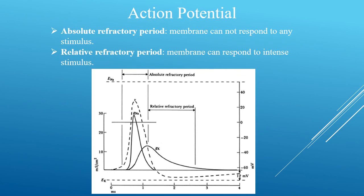A short period of time during which the cell cannot respond to any stimuli is called the absolute refractory period, which is about 1 millisecond. This is followed by the relative refractory period, during which another action potential can be triggered, but a much stronger stimulation is required compared to normal.